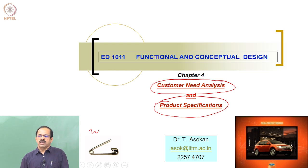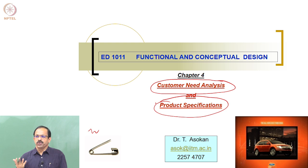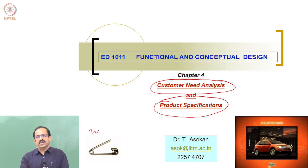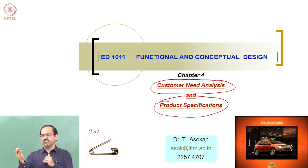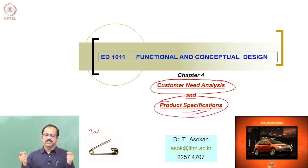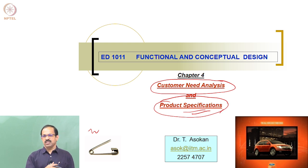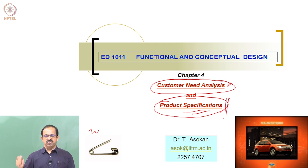The needs cannot be directly put as a design specification because a customer will say something like 'easy to use.' When you say easy to use is a customer need, how do we make that a design specification? How do you bring those requirements of the customer that will make the product easy to use into the design specification — what are the things to be done in the product to make it easy to use? That is basically known as converting the customer needs to the specifications of the product.